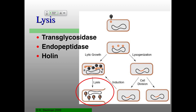To get out of the cell, lambda uses lysis proteins. There are three: a transglycosidase that chops up the glycan part of the peptidoglycan; an endopeptidase that chews up the peptide part; and a holin protein that makes a hole in the inner membrane so these enzymes can get through to break down the peptidoglycan. Once the peptidoglycan is broken down, the cell can't hold itself together anymore — it lyses and all the virions come out.